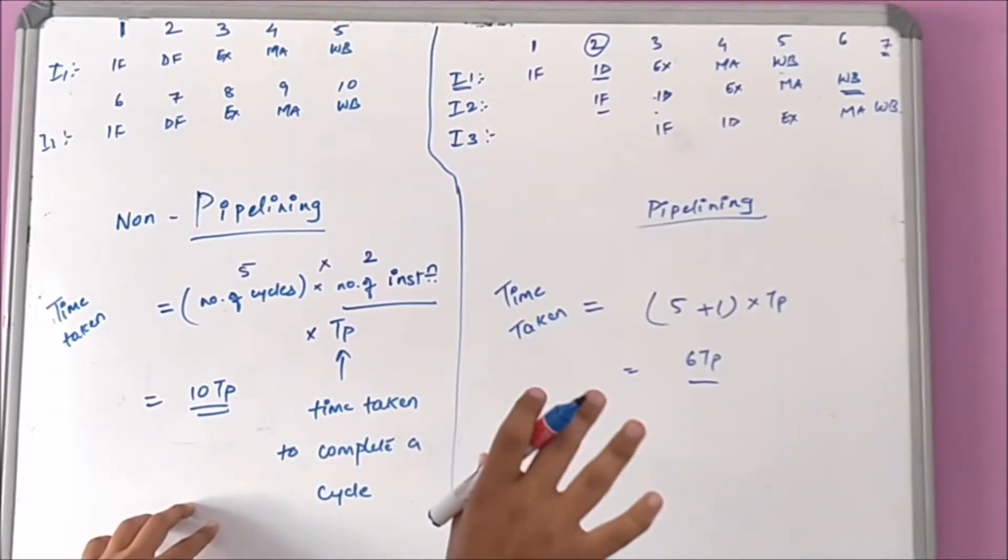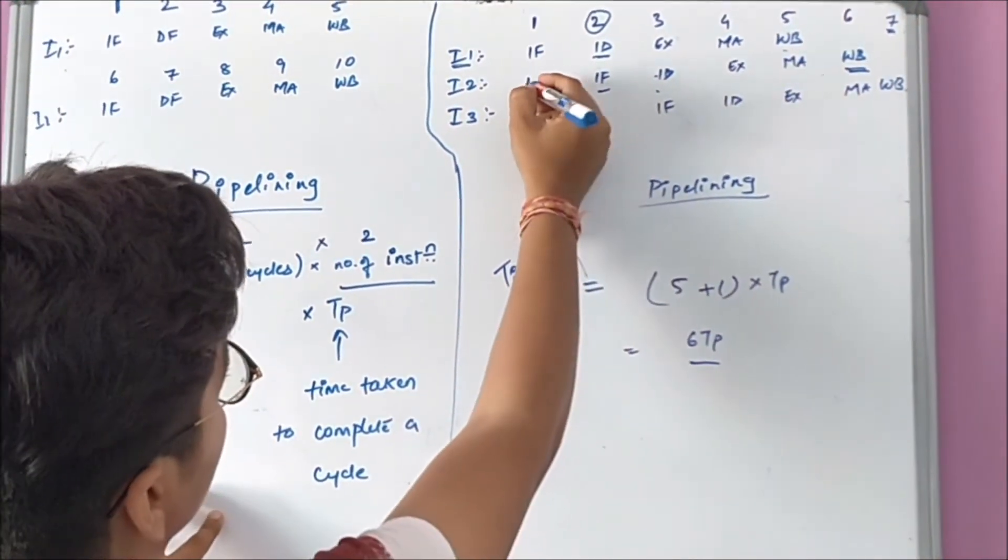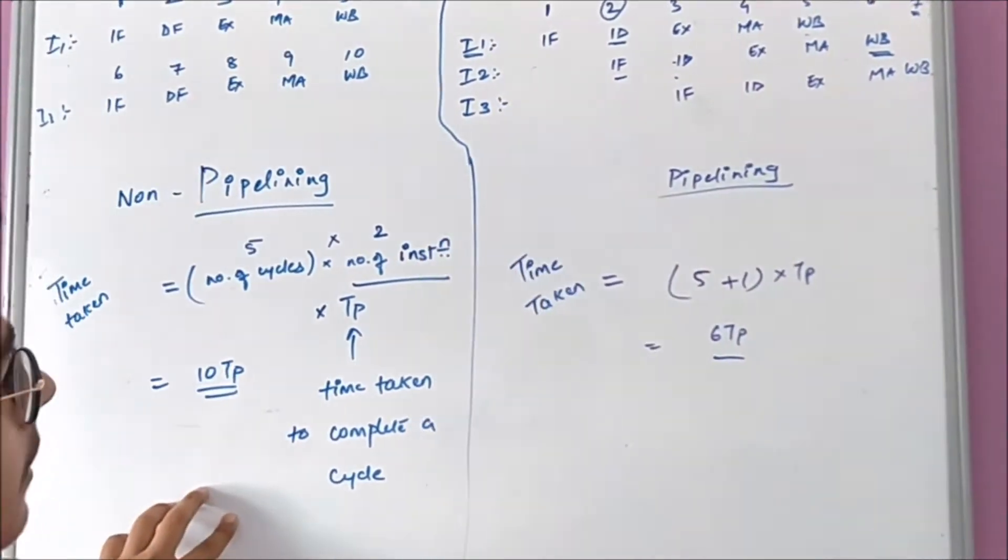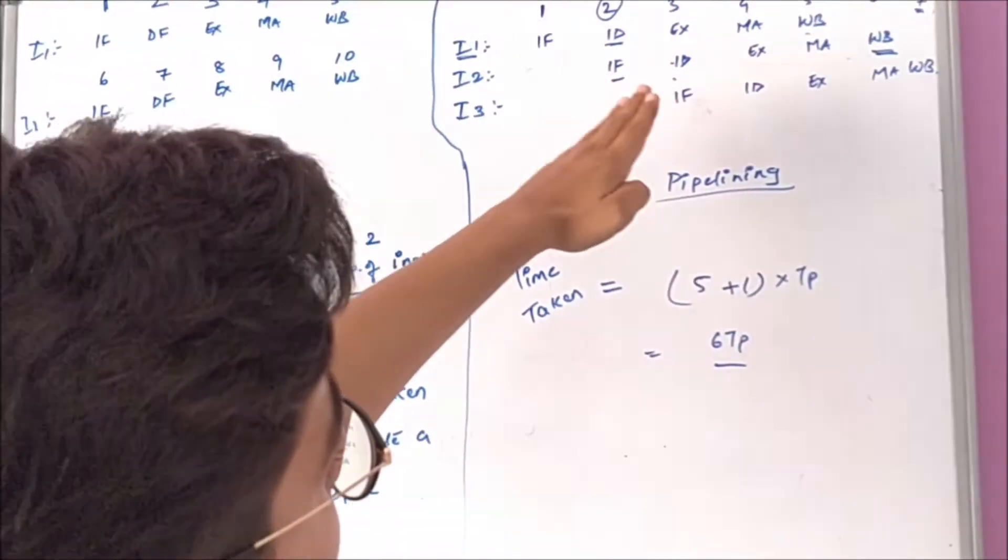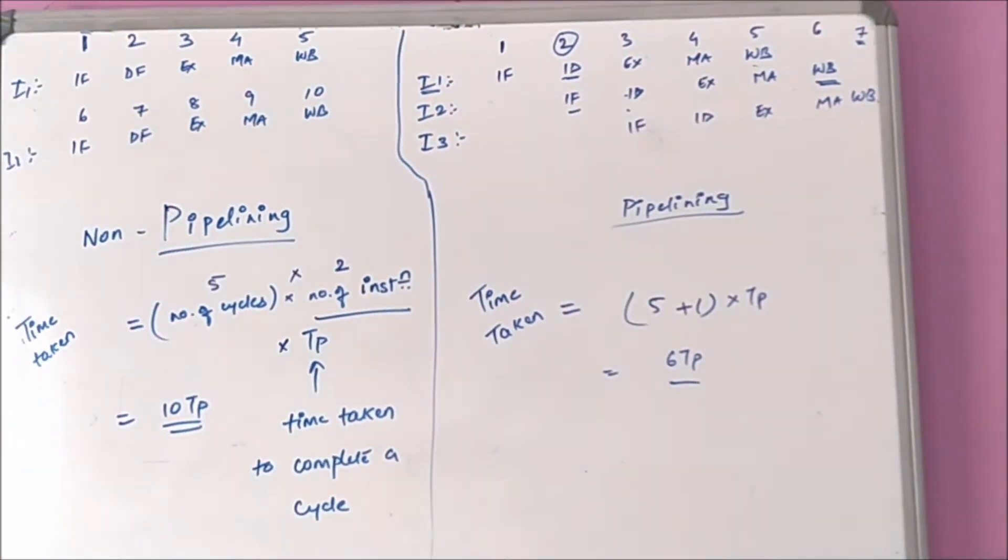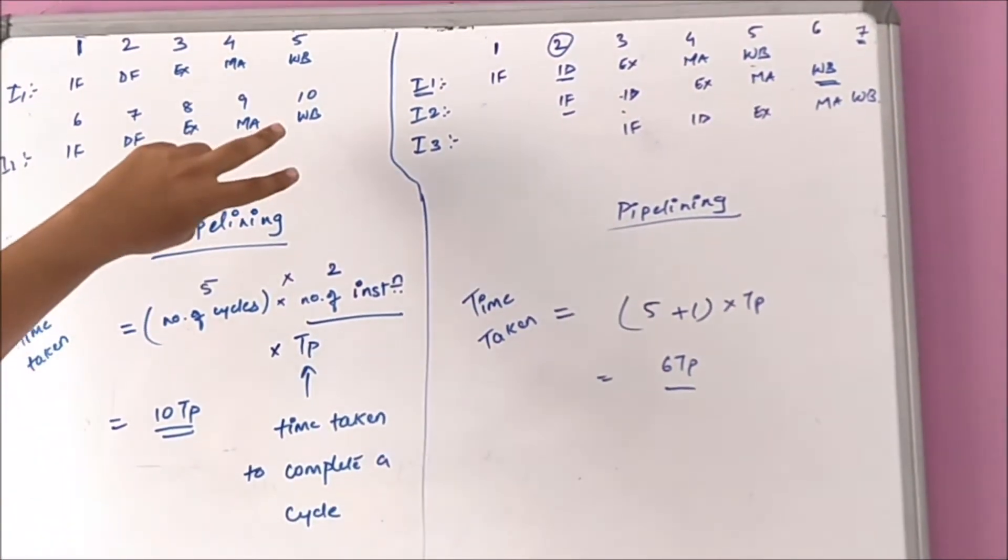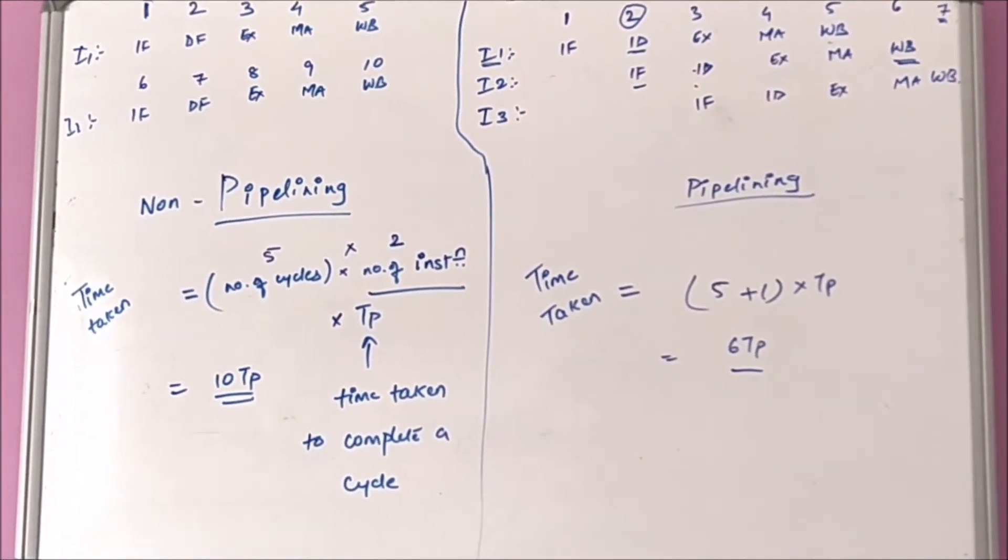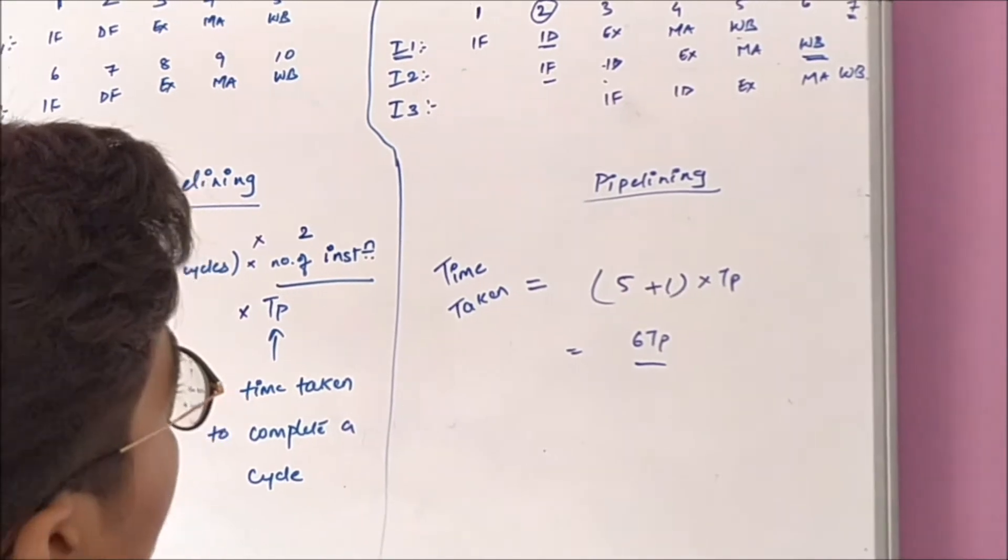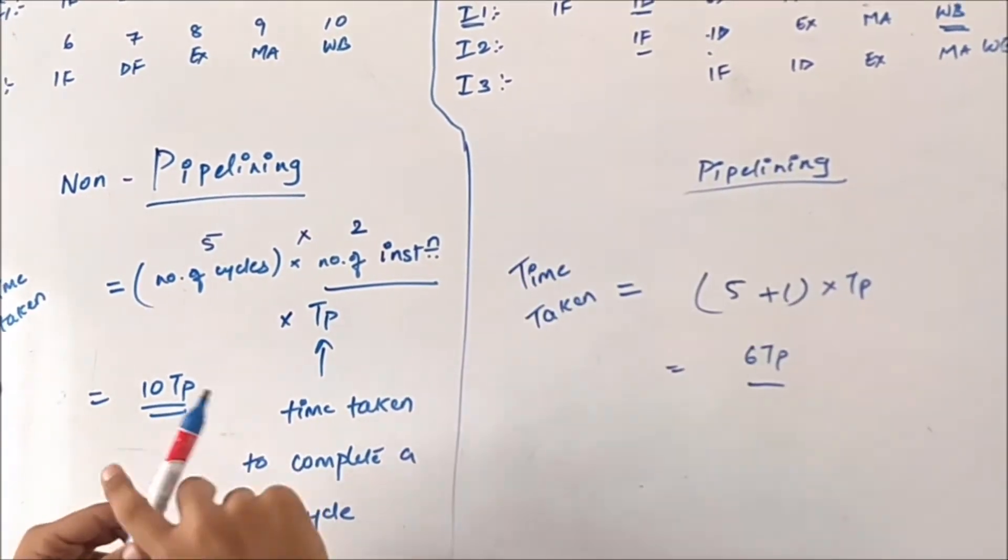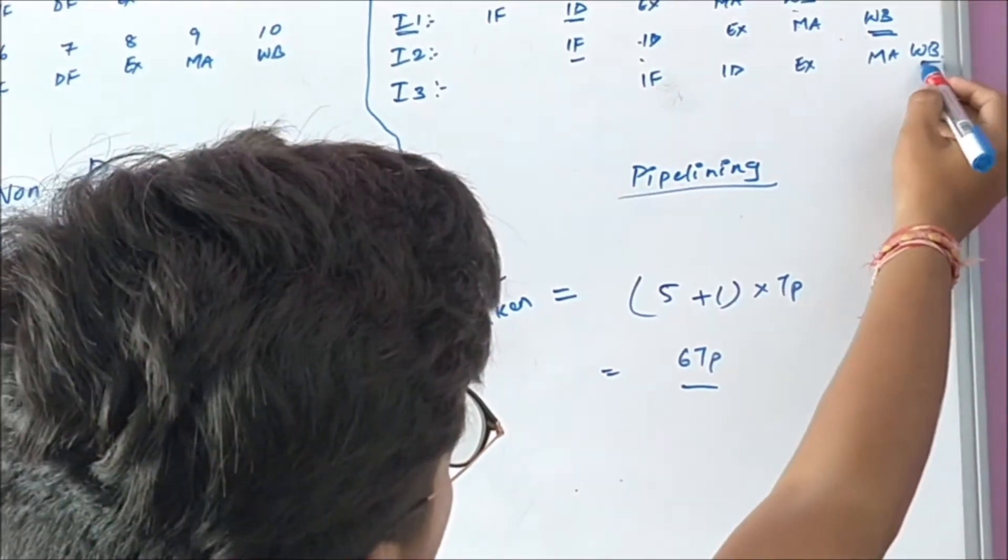You might be wondering why I didn't write IF in here also. There will be a conflict between the hardware. As you know, IF, ID, EXECUTION, MA, and W - there will be a conflict between the two instructions. It is not allowed for hardware to be mutually exclusive. For that, we can't use in a single cycle the same phase. I3 will be completing in the seventh cycle.